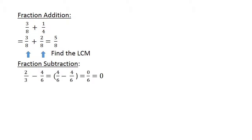Fraction subtraction: 2 over 3 minus 4 over 6. Find the lowest common multiple. 4 over 6 minus 4 over 6 equals 0.